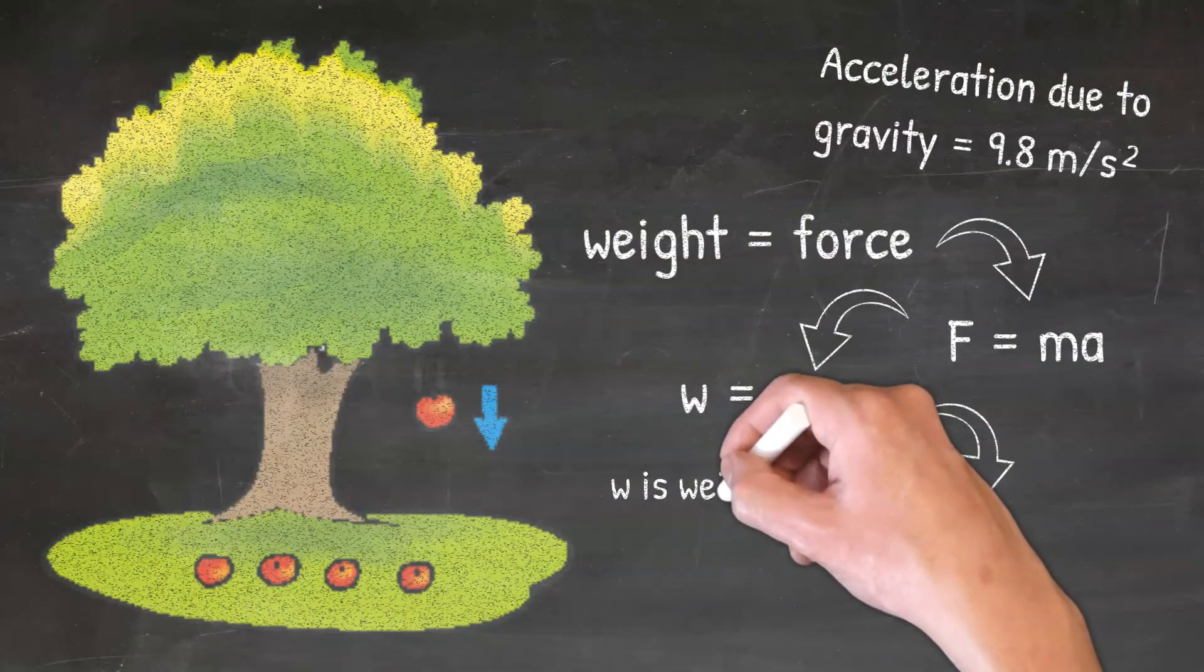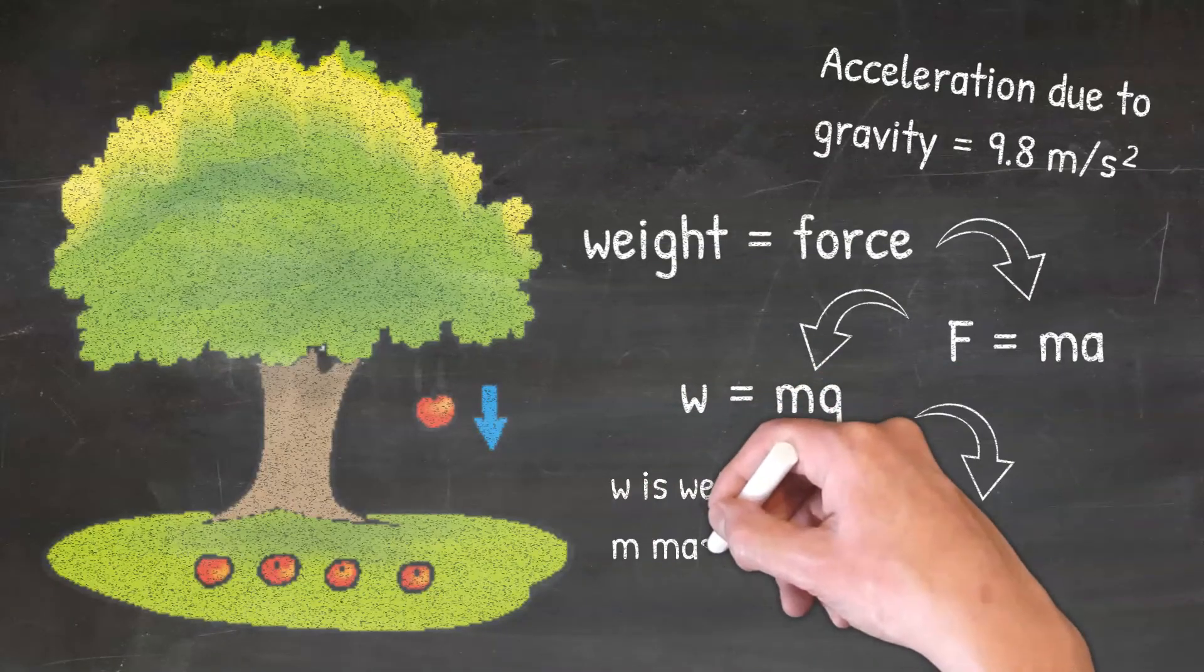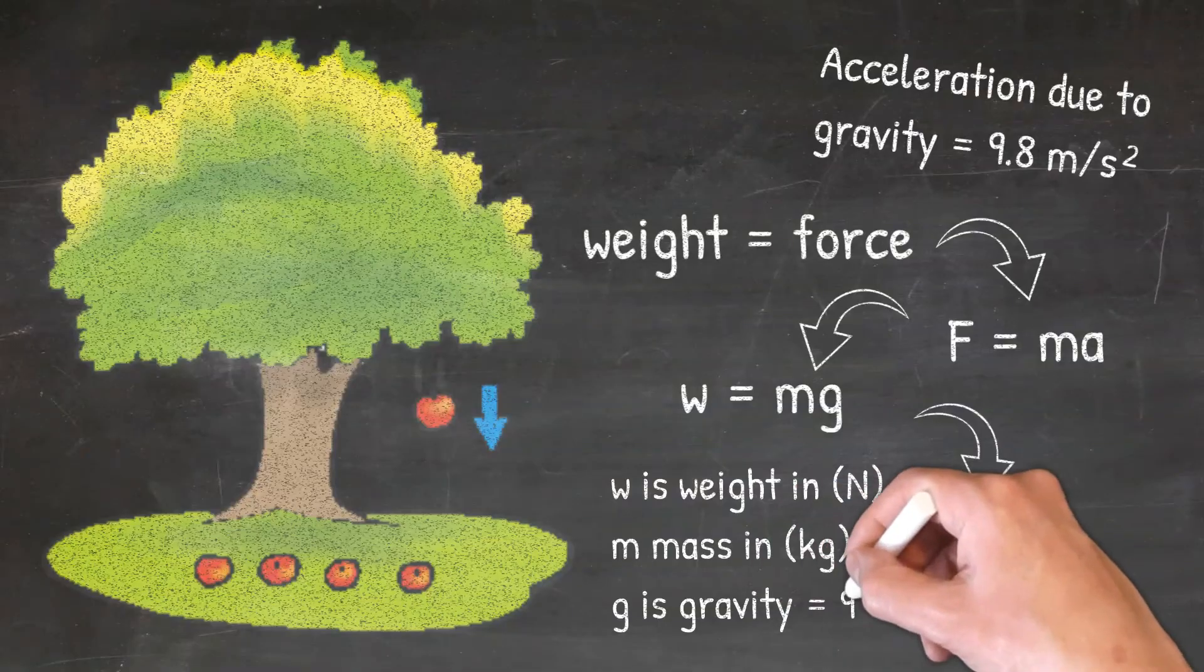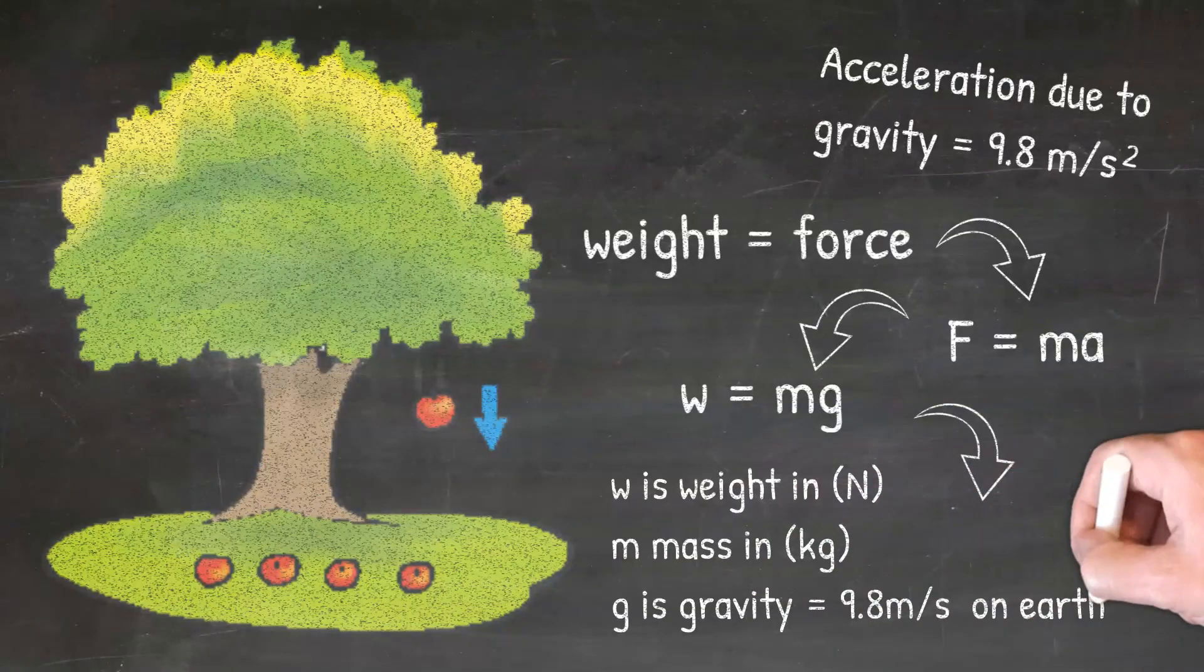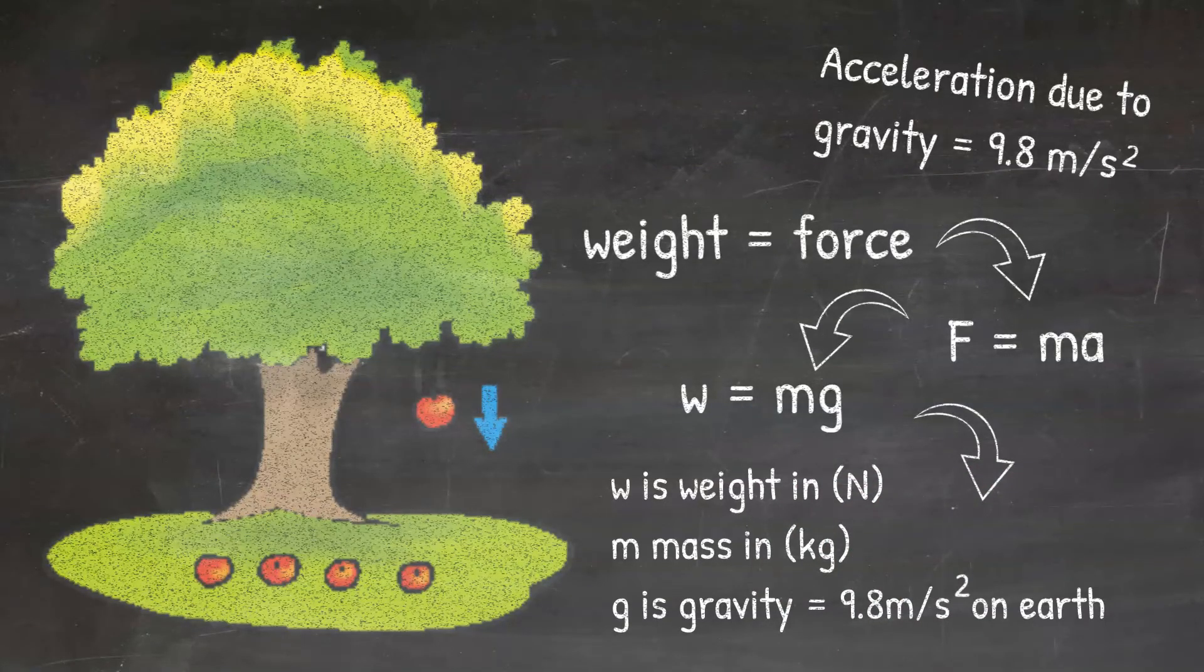Where W is weight in Newtons, M is still mass in kilograms, and G is gravity, or the acceleration due to gravity, which we have already said is 9.8 meters per second squared on Earth. Notice that the unit for weight is still Newtons, as weight is just the force of gravity.